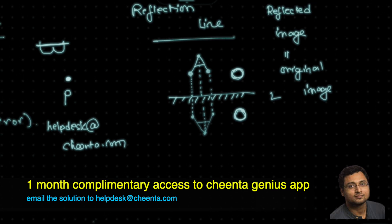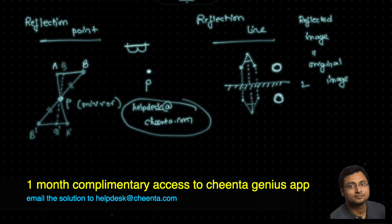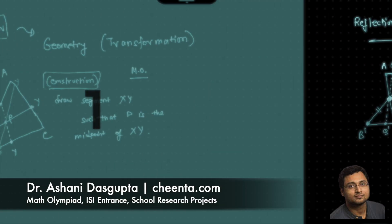Can you give me some pictures of objects where the reflected image looks exactly the same as the original? I'll give you a trivial example: a circle — the reflected image looks exactly the same as the original. Can you give me other examples? You can send it to helpdesk@chinta.com and we will arrange one month of free access to the Chinta Genius app where you can ask questions, pose doubts, take tests, and practice good mathematics.